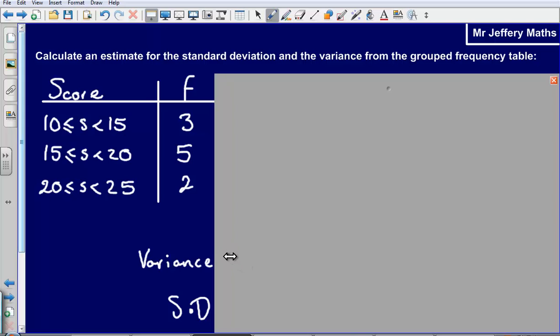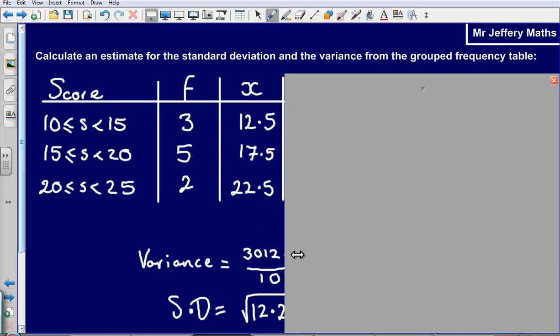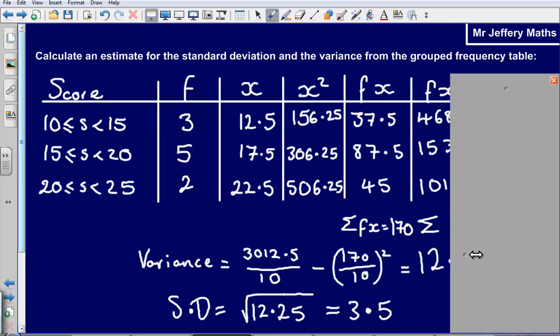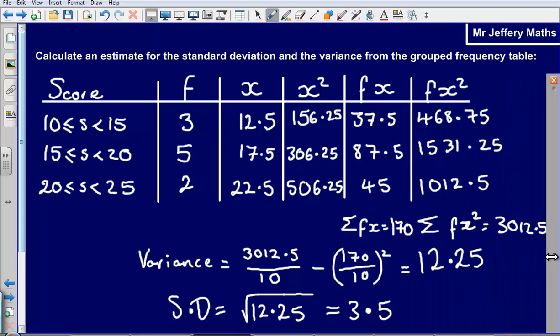So let's take a look at what our answer should be here. So our values for x, our midpoints should be 12.5, 17.5, and 22.5. Then the rest of our information, as we can see, is unfolding here. What we end up with is a variance of 12.25 and a standard deviation of 3.5.